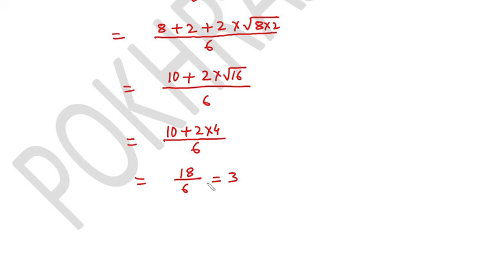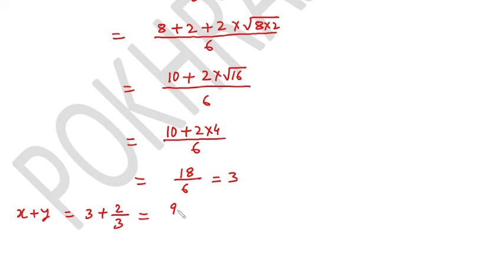We have got the value of x, that is 3. Now x plus y is equal to 3 plus 2 over 3, which equals 9 over 3 plus 2 over 3, that is 11 over 3. And our answer is 11 over 3.